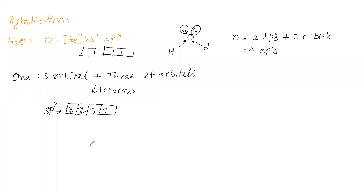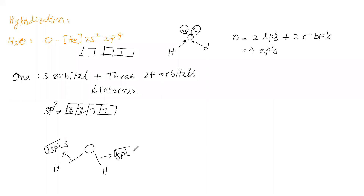So this sp³ orbitals will give this oxygen. Oxygen is making a sigma bond with hydrogen. This sigma bond is formed by the sp³ orbital of oxygen and the s orbital of hydrogen. Next, oxygen makes another sigma bond with hydrogen. This sigma bond is also formed by the sp³ orbital of oxygen and the s orbital of hydrogen. This oxygen is having one lone pair in one sp³ orbital and another lone pair in another sp³ orbital.